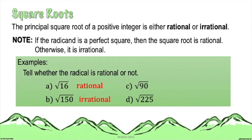For letter C, square root of 90 — 90 is not a perfect square, so the radical will give you an irrational number. And lastly, for letter D, square root of 225 — the radicand is a perfect square, so the value of the given radical is a rational number.